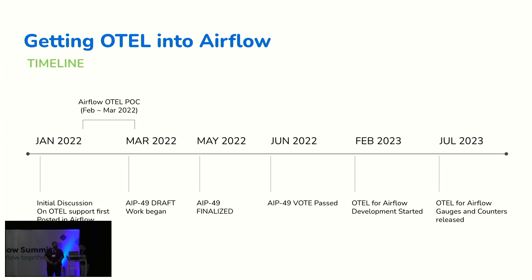During a one-month POC, I put instrumentation code to emit logs, traces, and metrics in OTEL format. I used the OTEL collector to collect all of them and a third-party solution to visualize metrics, traces, and logs in dashboards — proving everything could be visualized in a single place. That ended in March, and the first AIP draft work began. AIP means Airflow Improvement Proposal — if you want to make significant changes to Airflow, you start the AIP process by creating a proposal document from a template and submitting it. In this case, it received the number AIP-49.